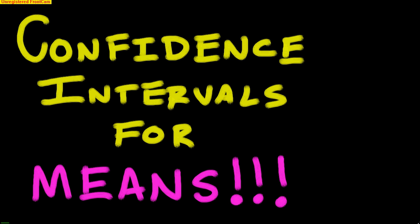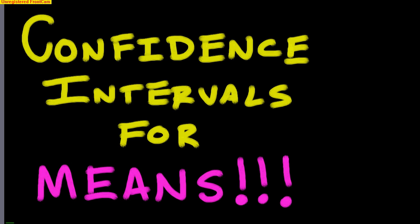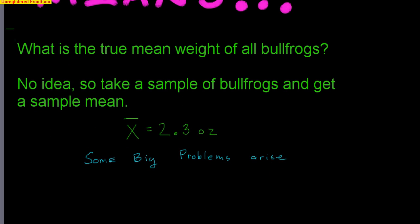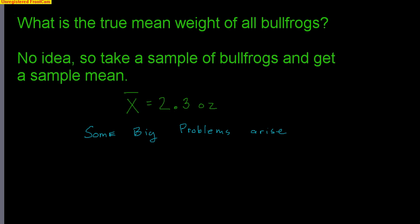The good news is a lot of similarities are going to come about. Here's the question I want to pose: what is the true mean weight of all bullfrogs? We have no idea, so we take a sample and get a sample mean. Let's say we take a sample of bullfrogs and get a sample mean of x-bar equals 2.3 ounces.